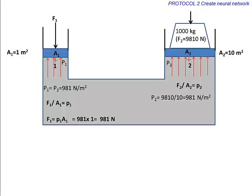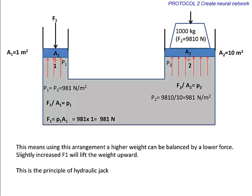In this case, a 1000 kg weight can be balanced by a force of 981 N. This means using this arrangement, a higher weight can be balanced by a lower force. Slightly increased F1 will lift the weight upward. This is the principle of a hydraulic jack.